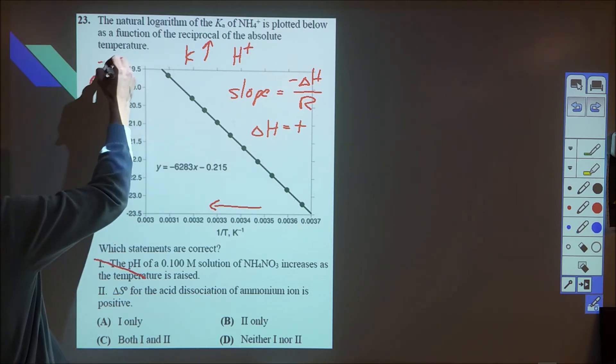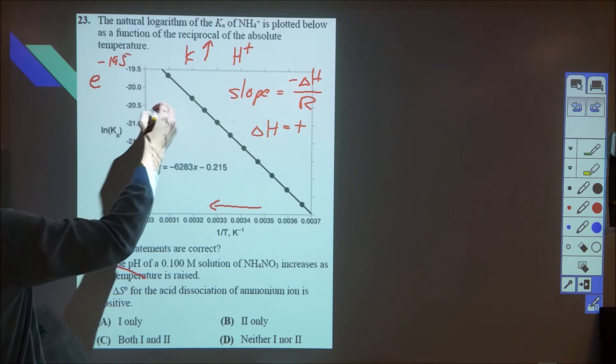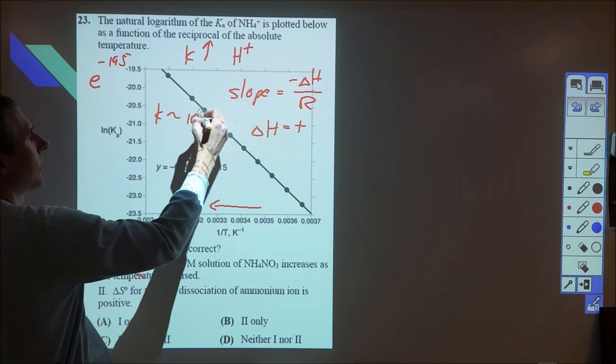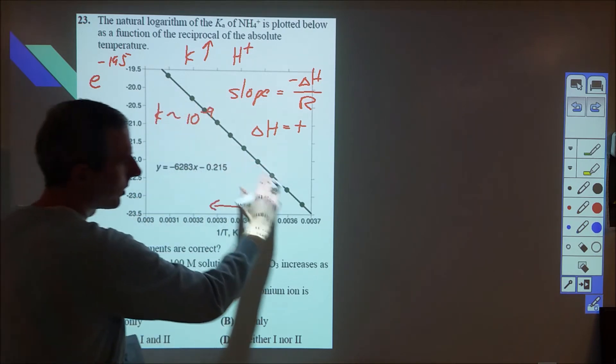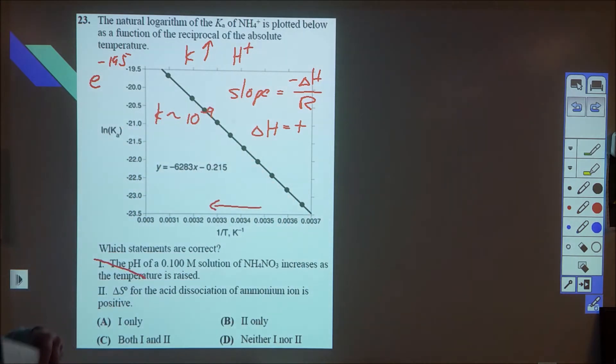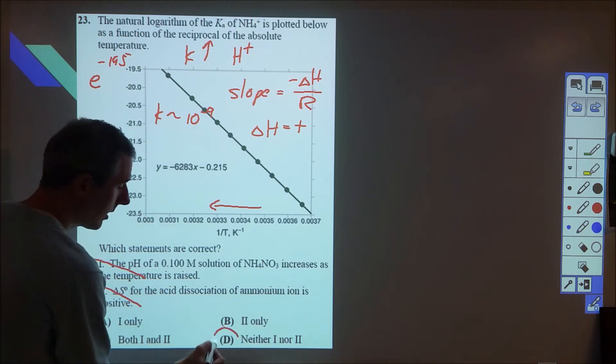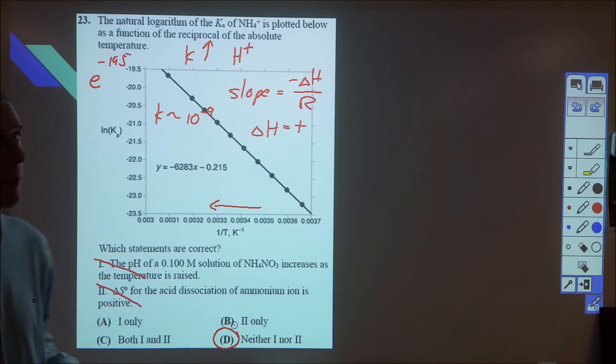So if we start with negative 19.5 and we undo the natural log there, so we do E to the negative 19.5, we end up with an equilibrium constant of about 10 to the negative 9. That equilibrium constant is going to drop as we move this way. So that implies that our delta G is definitely positive. And from that, then we're really probably not looking at an entropy change to be positive. And if it is, that's more of a combination of factors rather than something we should assume. So in that case, we're going with D. Neither option is correct for that.